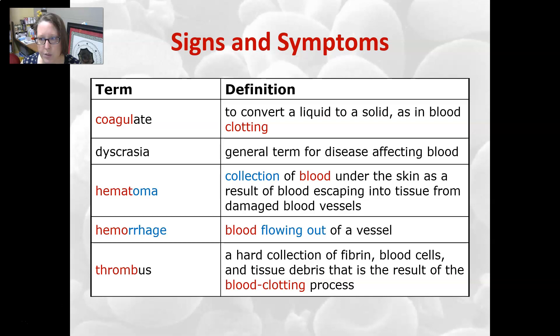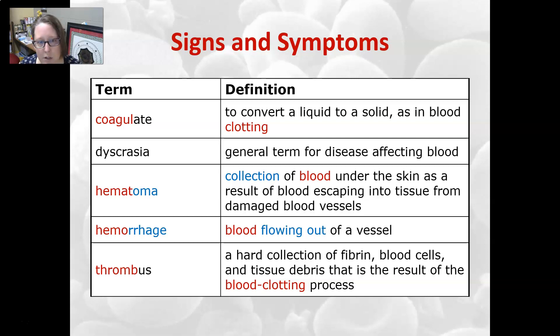convert a liquid to a solid, as in blood clotting. Milk can also coagulate when it goes bad and gets chunky. Dyscrasia is a general term for a disease affecting blood.